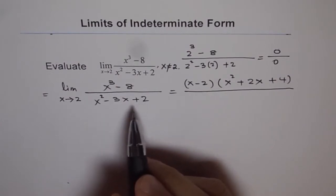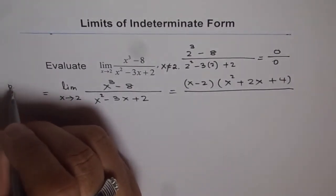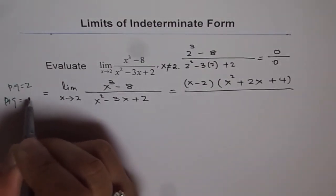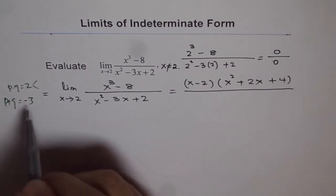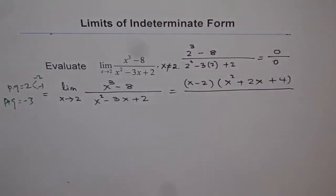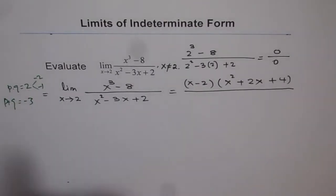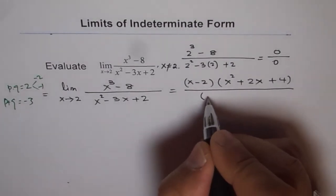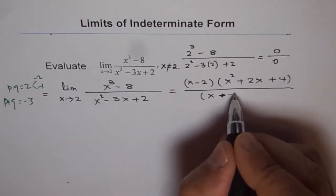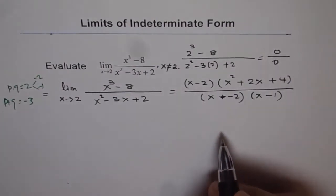Now for the denominator, we can use product and sum. Product should be 2, so we are looking for two numbers whose product is 2 and sum has to be minus 3. The two numbers which will give us 2 and minus 3 are minus 2 and minus 1. When we multiply minus 2 and minus 1 we get 2, but when we add them we get minus 3. So we can factor the denominator by using these two numbers: x minus 2 and x minus 1. You can always check. So that is what we get.